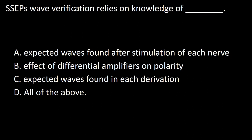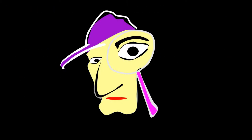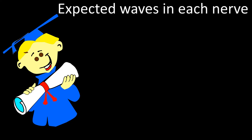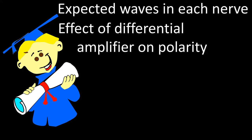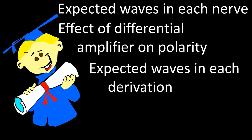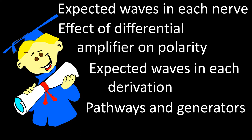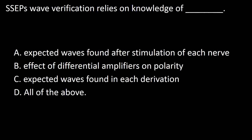Next question. Somatosensory evoked potential waves verification relies on the knowledge of: A, expected waves found after stimulation of each nerve; B, effect of differential amplifier on polarity; C, expected waves found in each derivation; D, all of the above. The foundation of wave verification includes: expected waves found after stimulation of each nerve, the effect of differential amplifier on wave polarity, expected waves in each derivation, and the neurological pathways and generators involved, including the timing of the different waves. The answer is D.